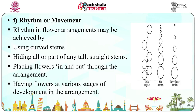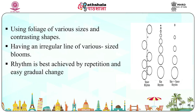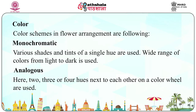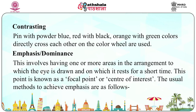Rhythm or movement in flower arrangement may be achieved by using curved stems, hiding all or part of any tall straight stems, placing flowers in and out through the arrangement, having flowers at various stages of development, using foliage of different sizes and contrasting shapes, having an irregular line or various sized blooms. Rhythm is best achieved by repetition and easy gradual change. Color schemes in flower arrangement include: monochromatic — various shades and tints of a single hue from light to dark; analogous — two to four hues next to each other on a color wheel; and contrasting — colors directly across each other on the color wheel, such as pink with powder blue, red with black, or orange with green.